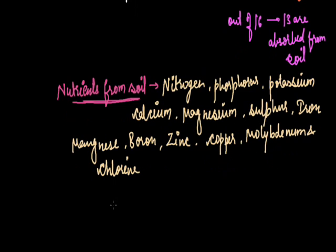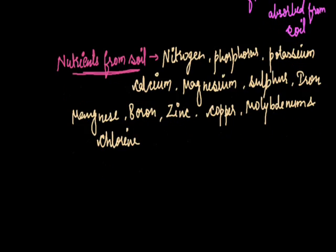The main plant nutrients Carbon and Oxygen are obtained from air, and Hydrogen is obtained from water. Next, after discussing nutrients absorbed by plants through the soil, we will start the topic of soil profile.